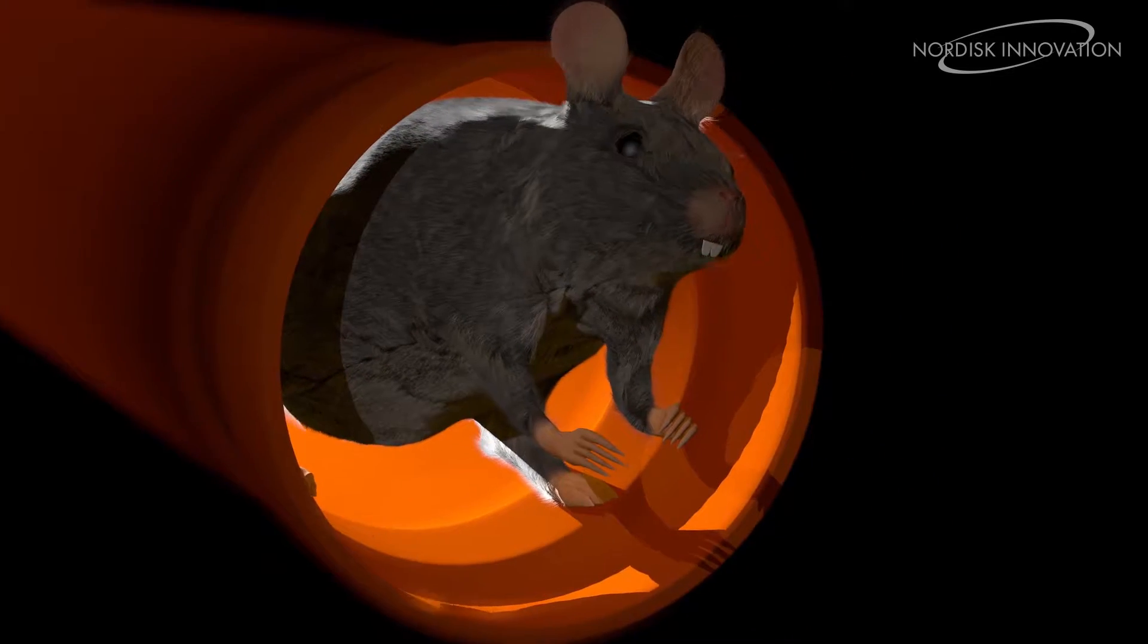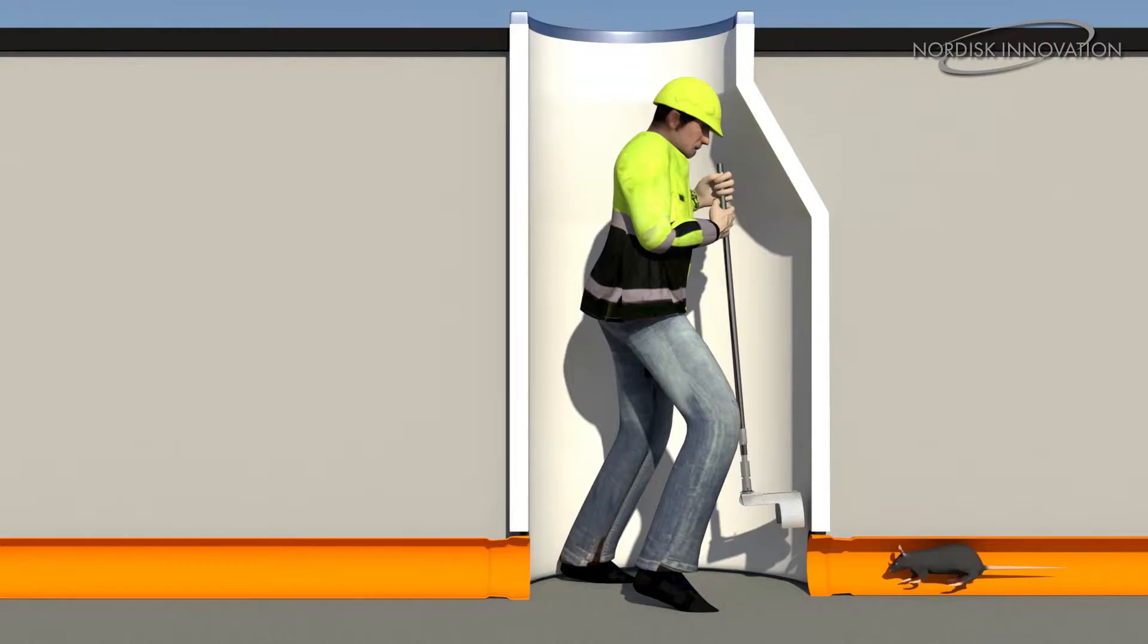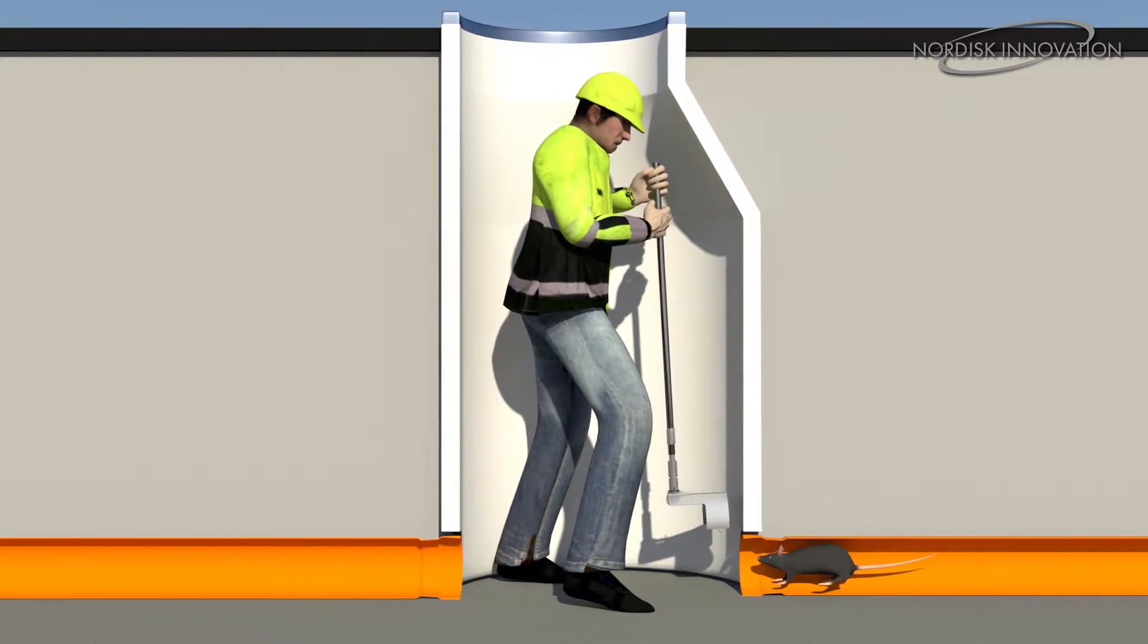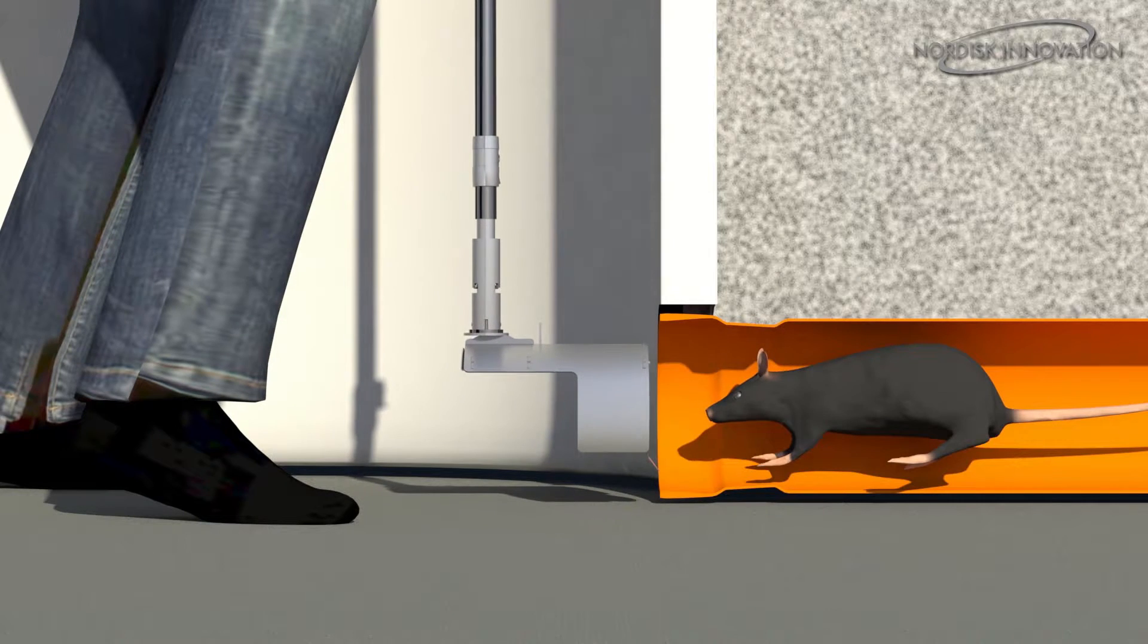Until today, there has only been one way to install and service a rat blocker. You would need to climb into concrete 1000 and 1250 mm wells with a conical shape descent.